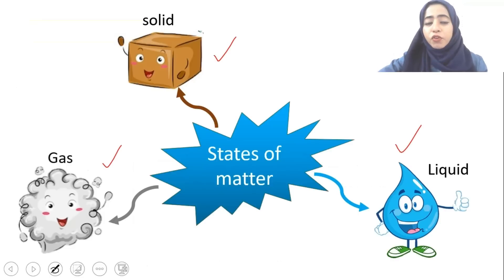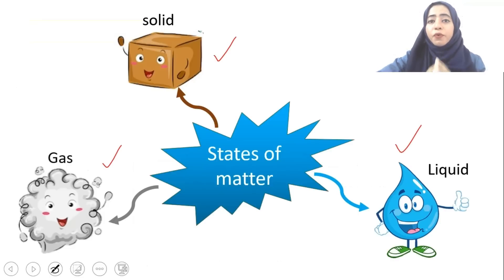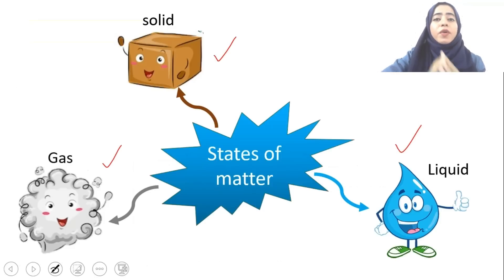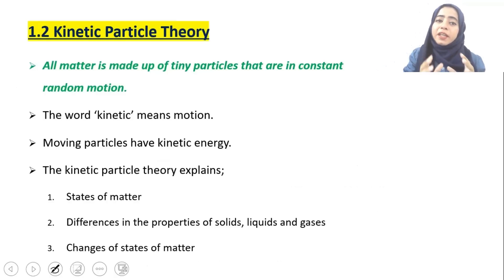Depending upon mass and volume, we can have three different types of matter: it can be solid, liquid, and gas. One by one we will talk about all the properties of matter, but before that we are going to discuss a very important theory called kinetic particle theory.